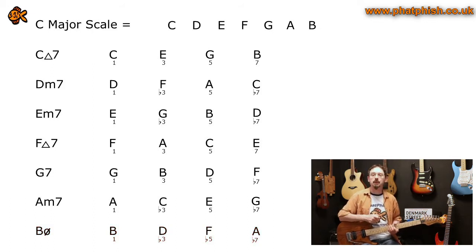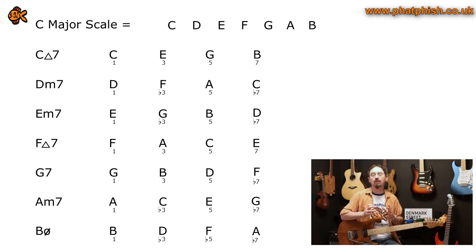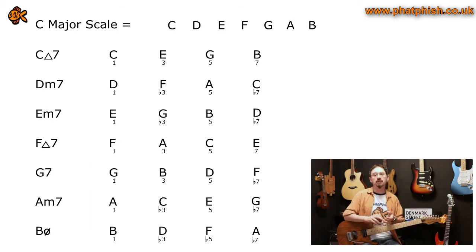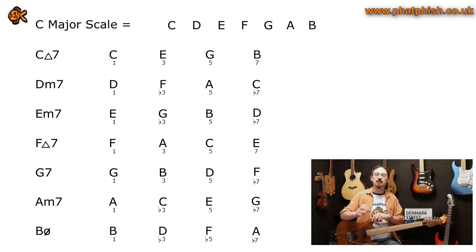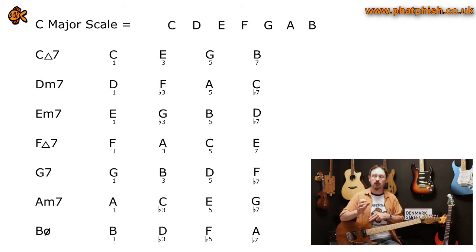Two different names for the last chord but effectively the same thing. When we harmonise the scale in triads or seventh chords, what we're saying is these are the chords available to us that are diatonic to the key. In C major, we can use C major seven, D minor seven, E minor seven, F major seven, and so on. It's generally not appropriate to use chords like D major seven or F minor seven because they contain notes that aren't diatonic. You could use them as passing chords for tension, but strictly speaking these are our diatonic options.